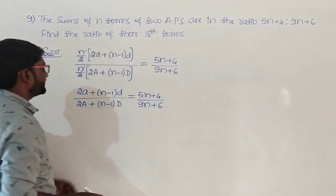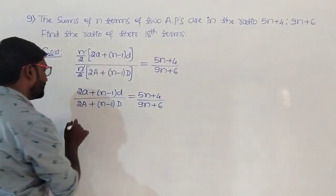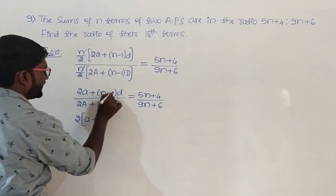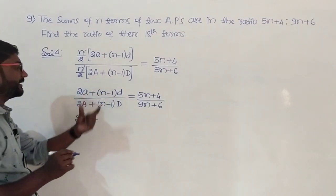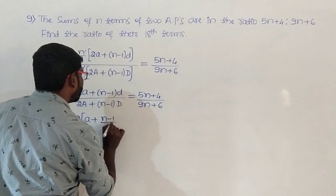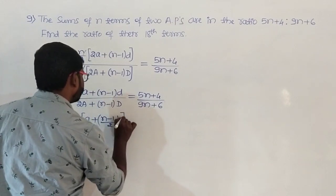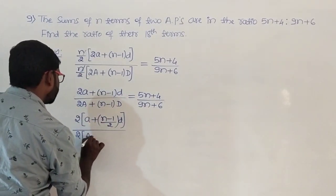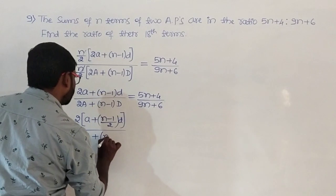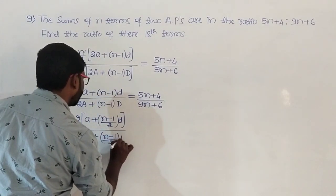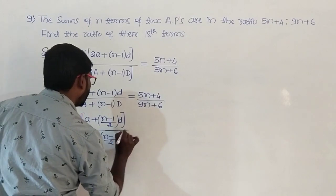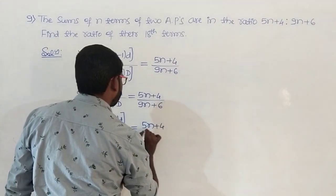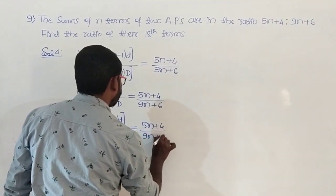Now on the left hand side, take 2 common in the numerator as well as in the denominator. So you get a plus n minus 1 divided by 2 into d, divided by A plus n minus 1 by 2 into capital D, which equals 5n plus 4 divided by 9n plus 6.